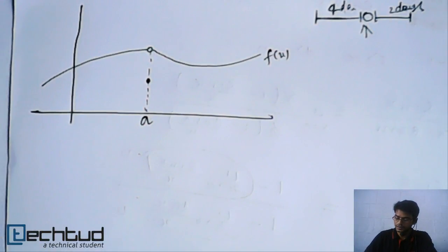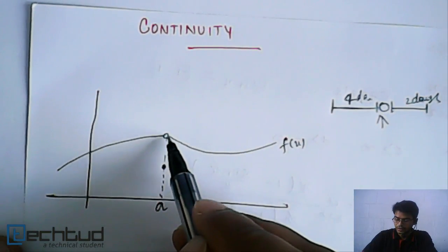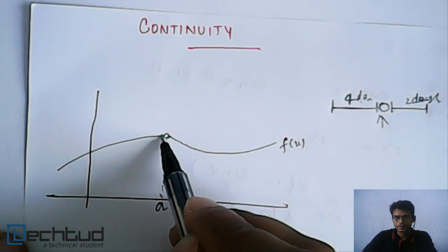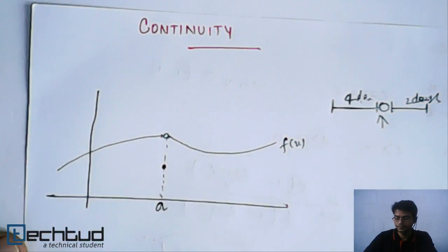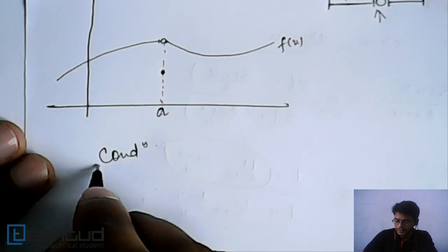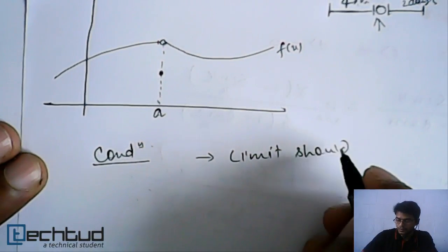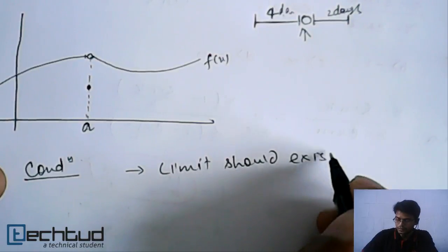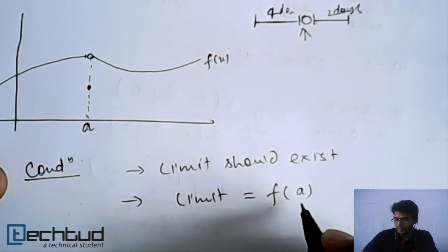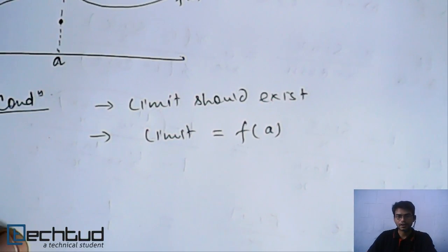So what is the condition for continuity? For a function to be continuous, its limit should exist. The limit should exist and the limit should be equal to the value of the function at that point itself. The condition is: the limit should exist, and the limit at point 'a' should be equal to f(a) — the value at that point.